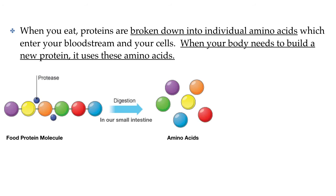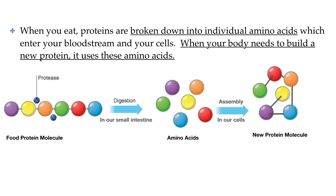So when we eat, the proteins in our food need to be broken down to their individual amino acids before they can be absorbed into our bloodstream, where they can travel to our cells to be used as building blocks for our own proteins. We need to make sure we get enough protein in our diet so that the right types of amino acids are available whenever our cells need to build a new protein.